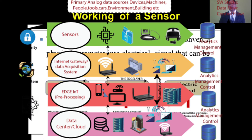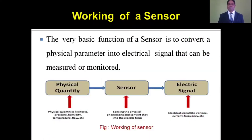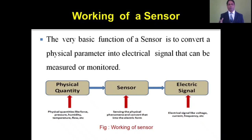This is quite interesting to know how a sensor works. A very basic function of a sensor is to convert a physical parameter into an electrical signal that can be measured or monitored. In the figure, we can see there is a physical quantity — which can be force, pressure, humidity, temperature, flow, gas, smoke, or whatever. The sensor senses that physical parameter or quantity and converts it into an electrical signal in the form of voltage or current.